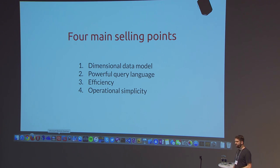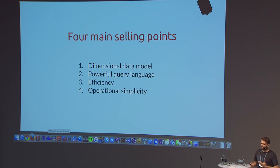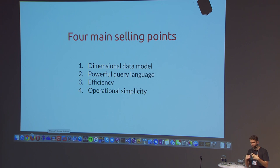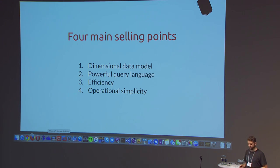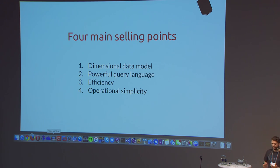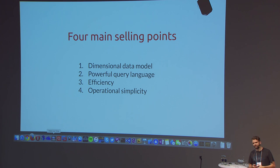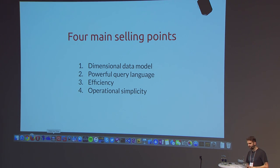Prometheus has four or five main selling points. The biggest are the dimensional data model — really being able to figure out where a metric came from and what it pertains to — and a powerful query language called PromQL to work with that data model. It's really efficient: a single node can ingest around 800,000 samples per second and handle multiple millions of time series, storing them very efficiently on disk. It's also operationally simple — built in Go, it's a single static binary, you need a small config file, start it up and it writes to local disk.